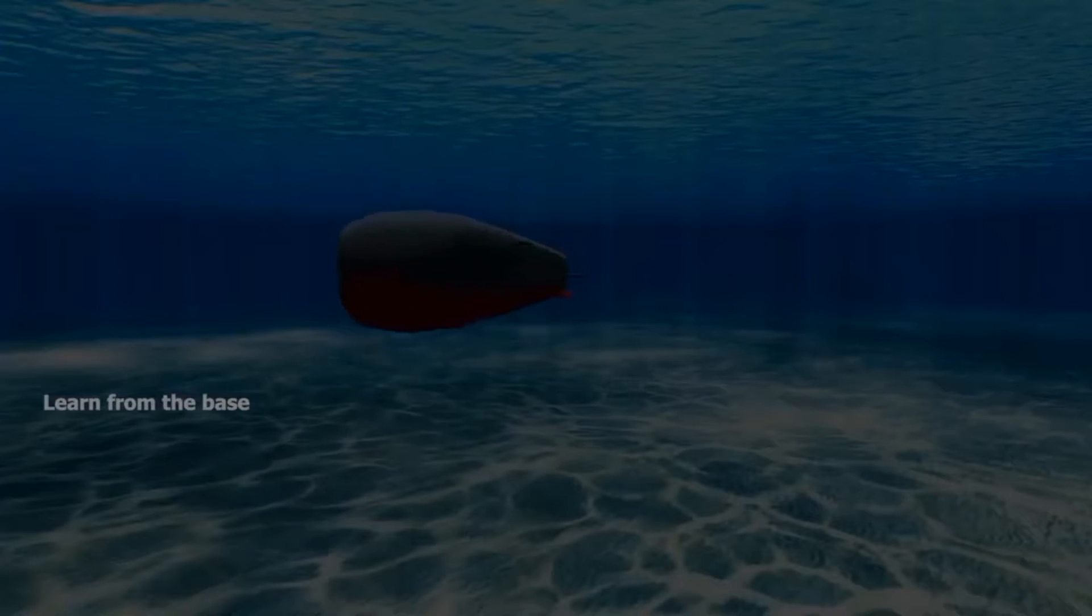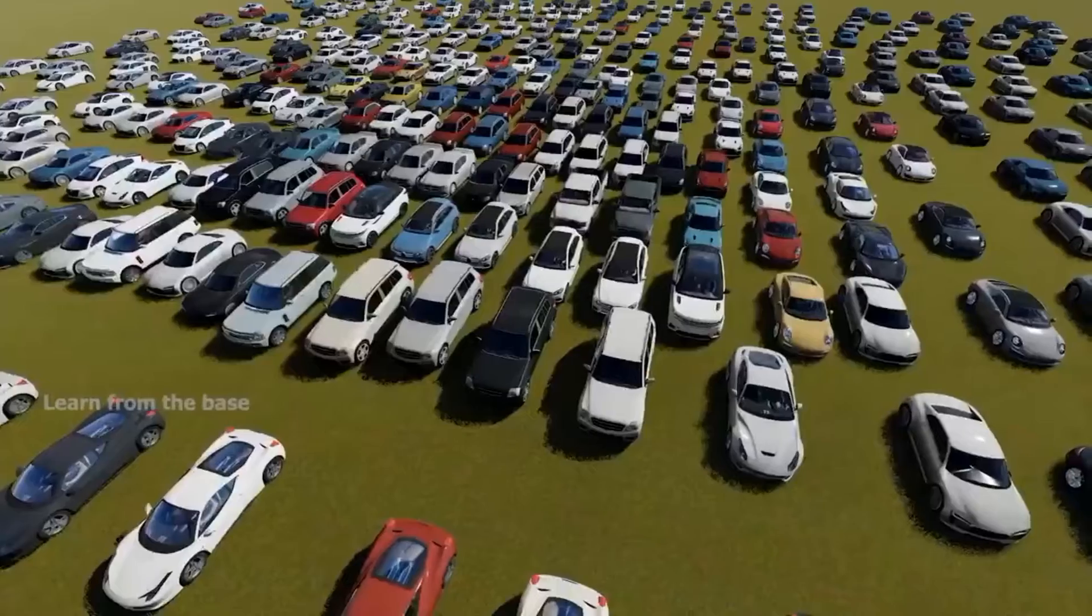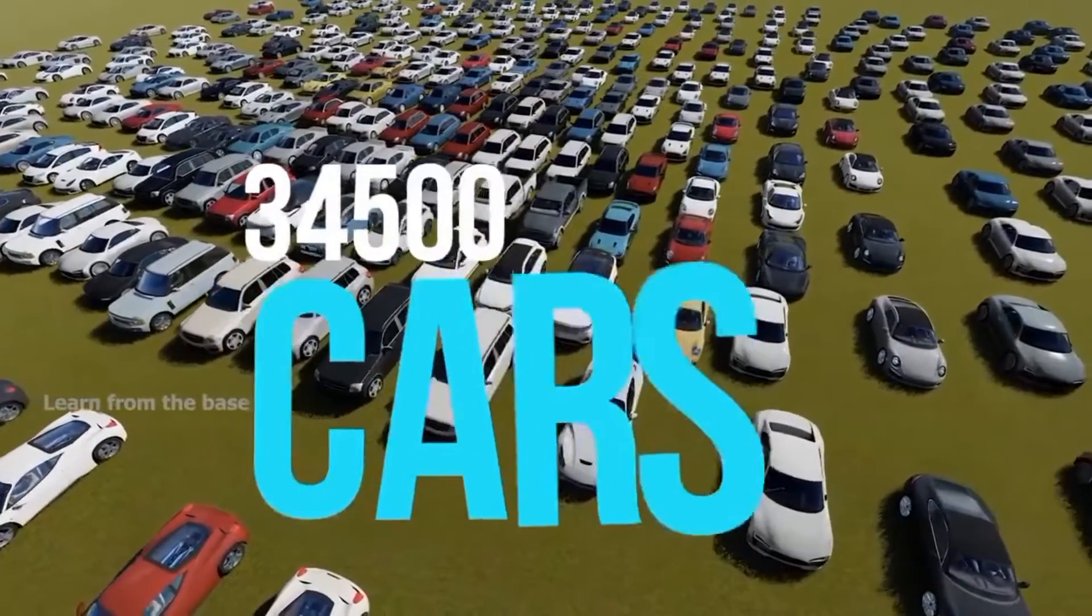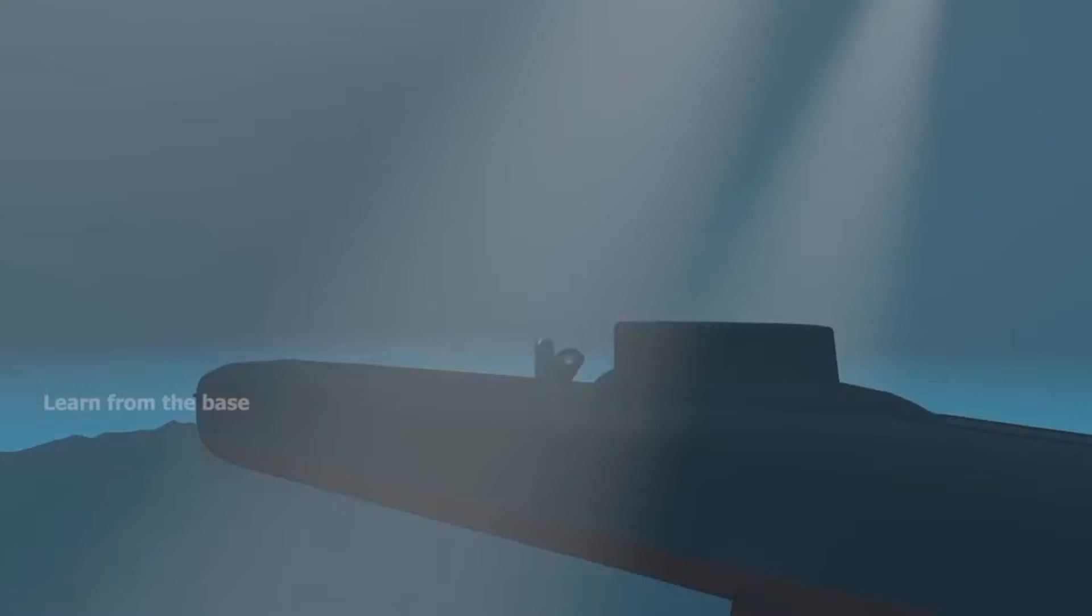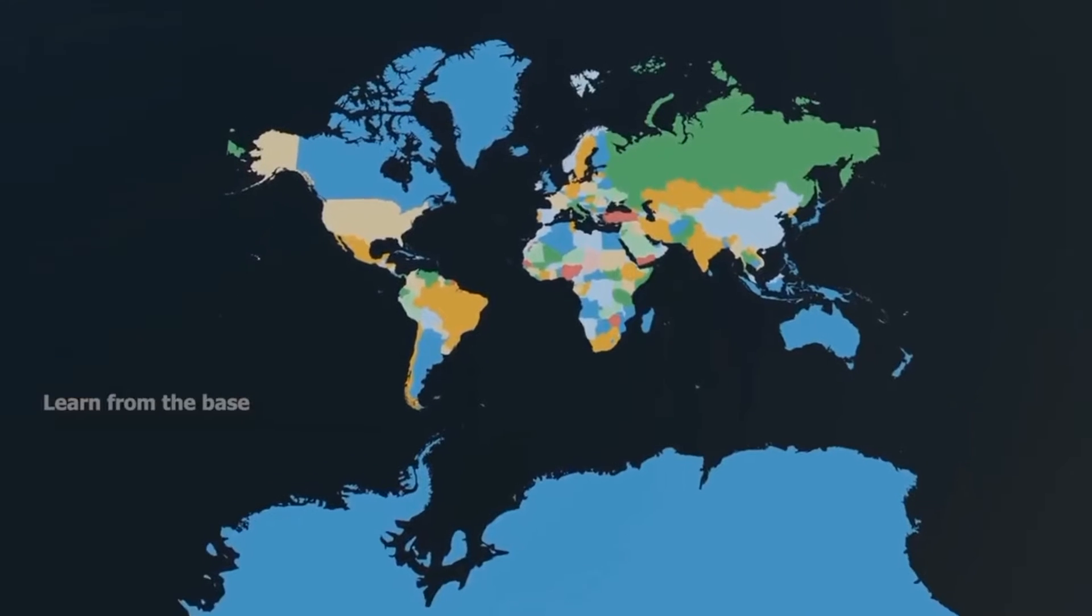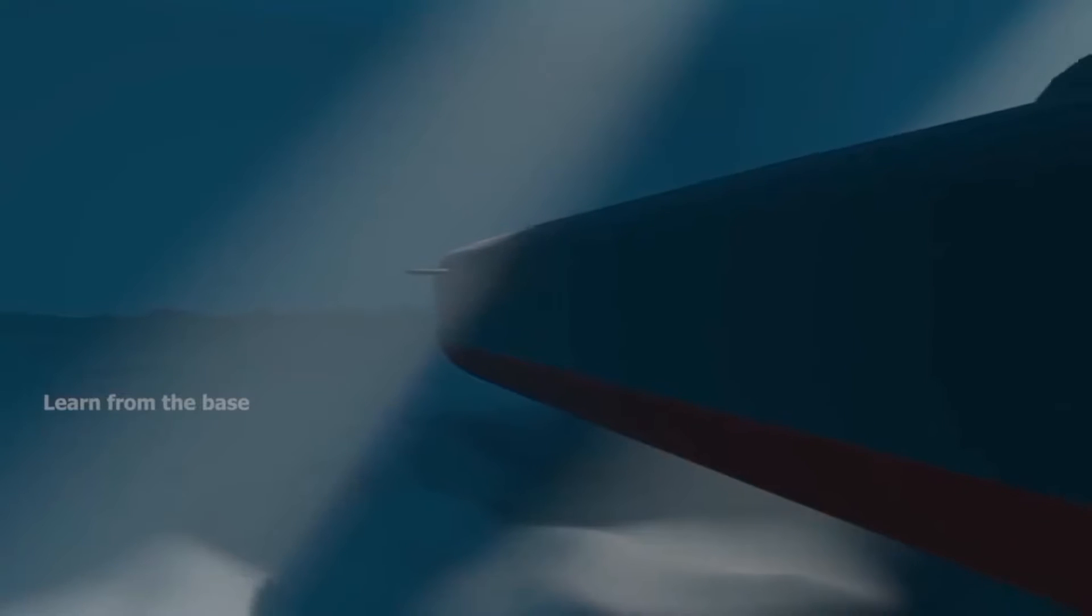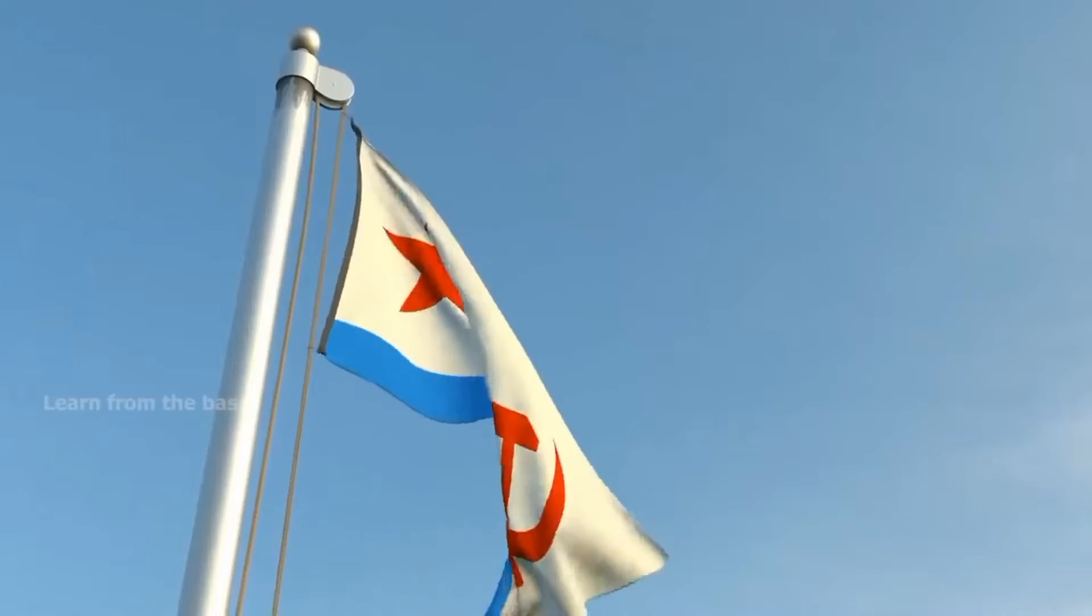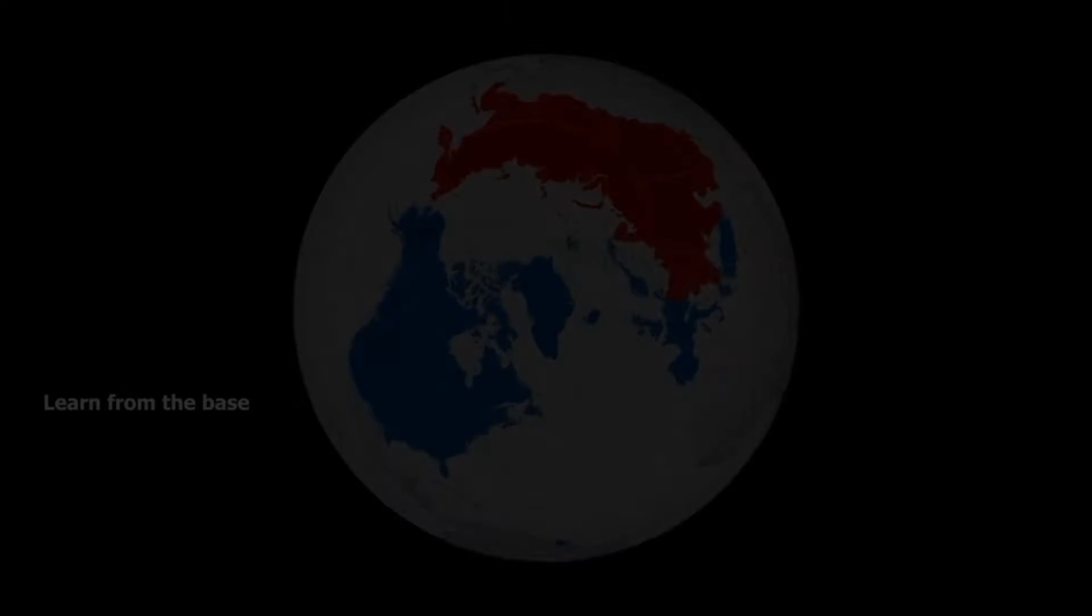This submarine weighs a whopping 48,000 tons, equal to the weight of about 34,500 cars. These submarines are capable of launching nuclear warheads underwater, a weapon system that can burn the whole continent to the ground. These submarine cruisers became the most powerful weapons, a banner of Soviet Navy power and a symbol of Cold War fears.